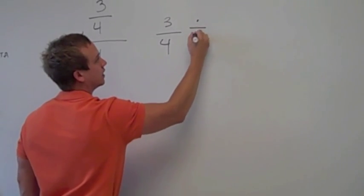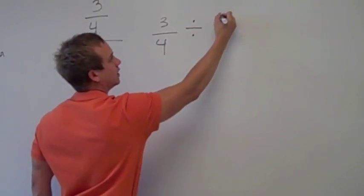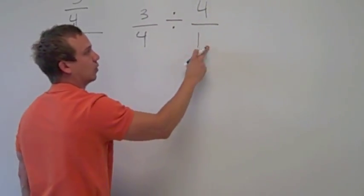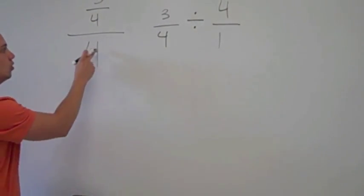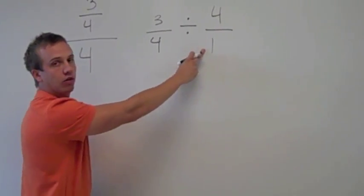by 4. I can write that as 4 over 1, because any whole number as a fraction is just putting it over 1.